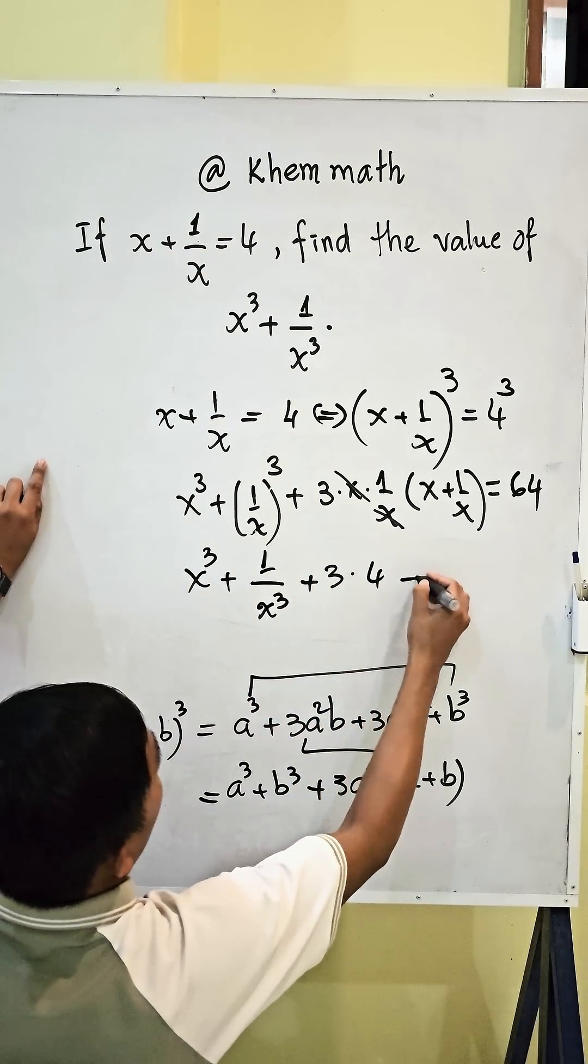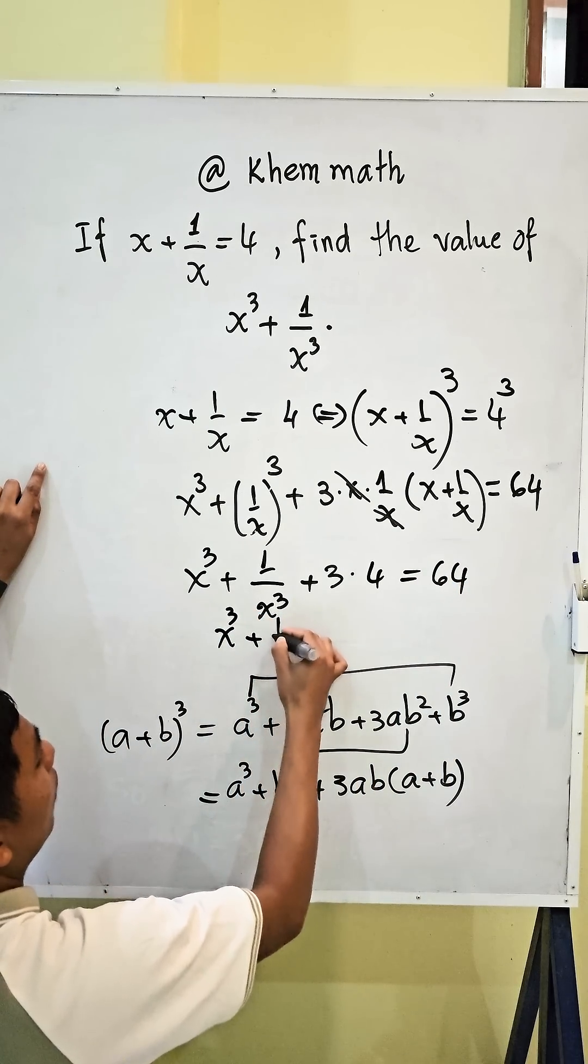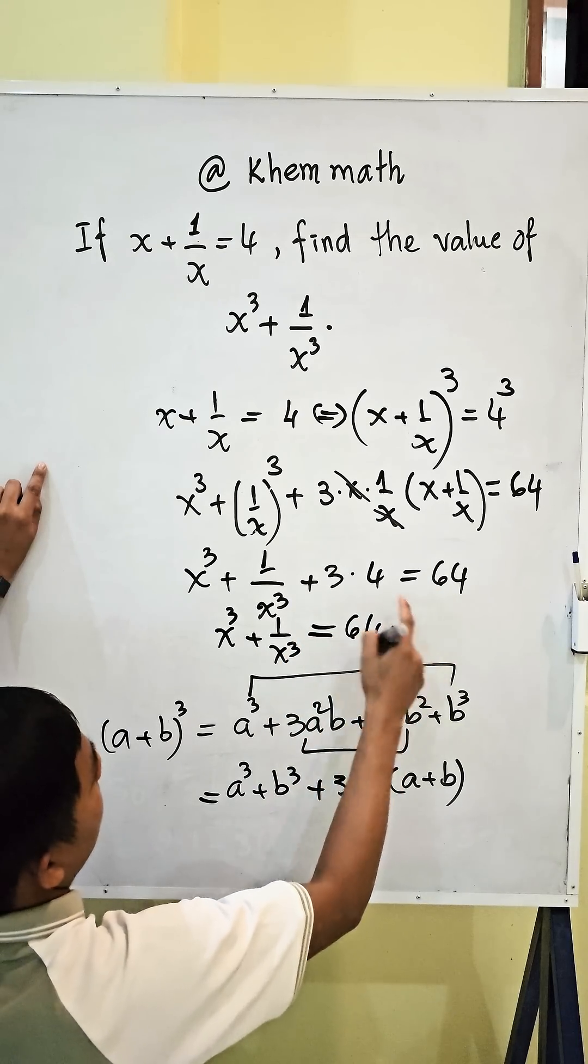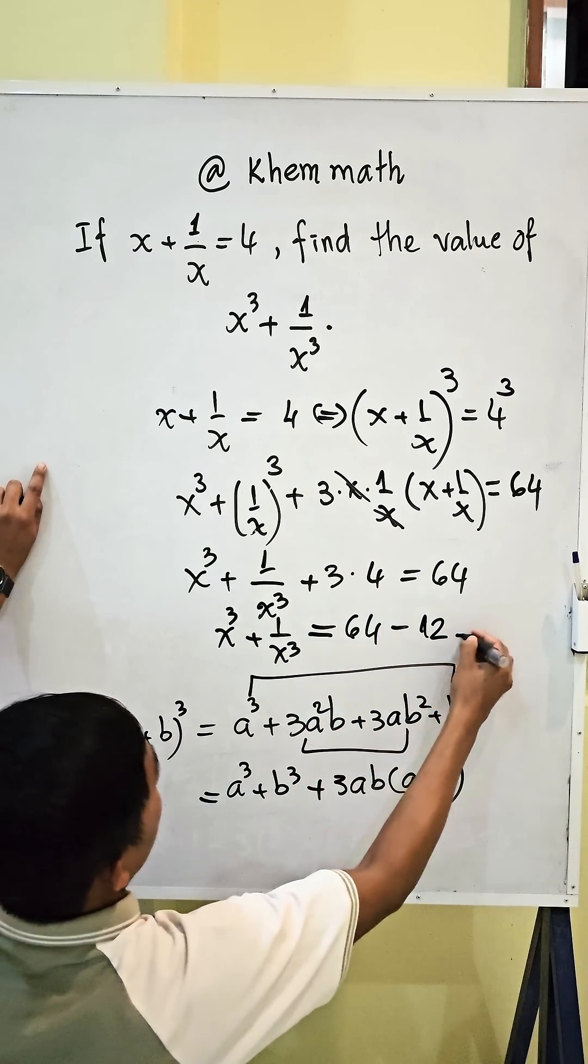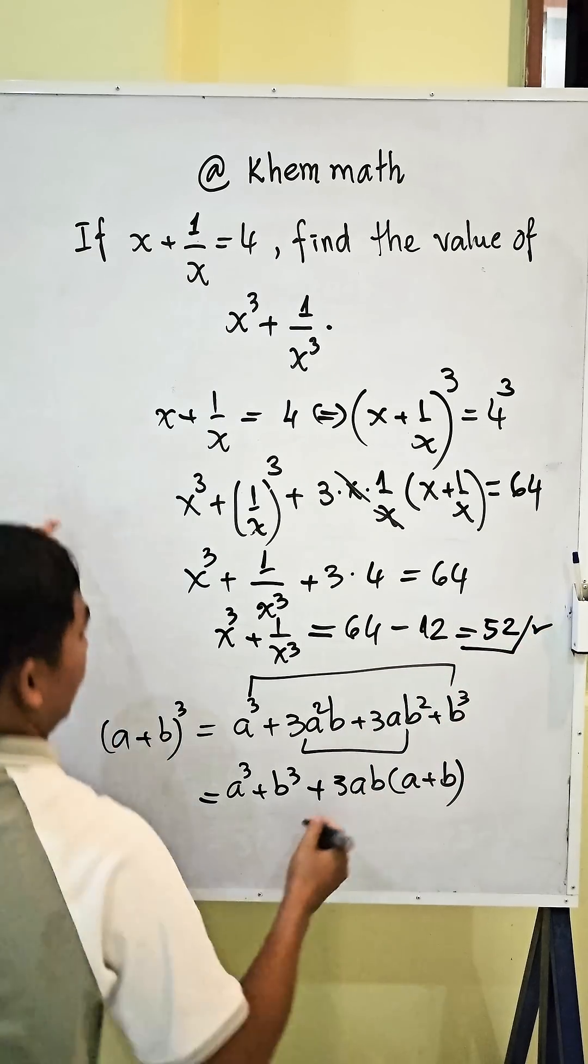So we get this x power 3 plus 1 divided by x power 3 equals 64.